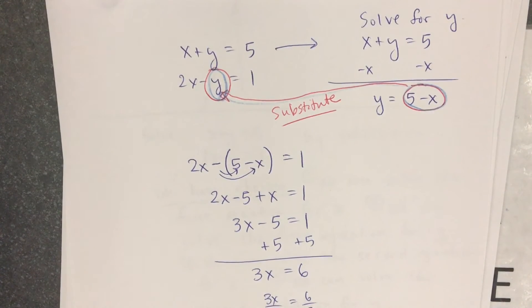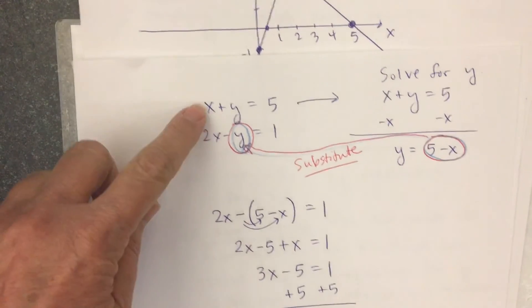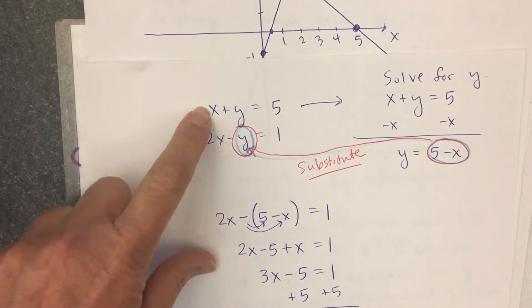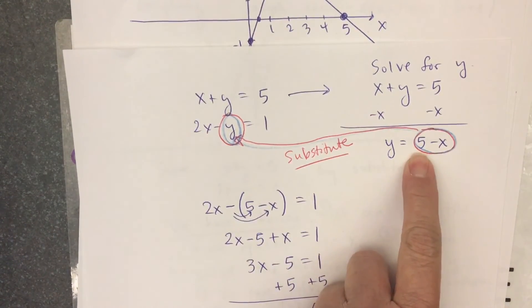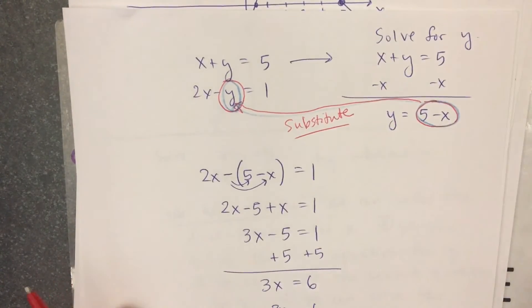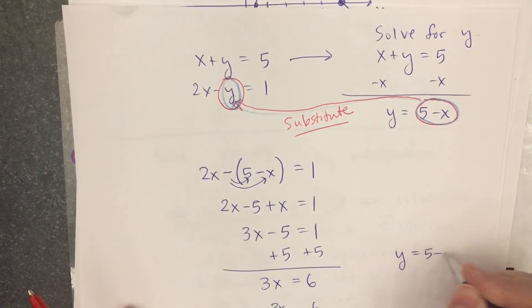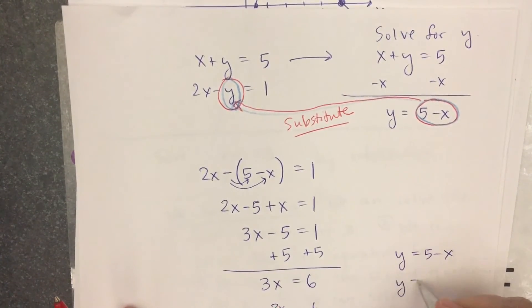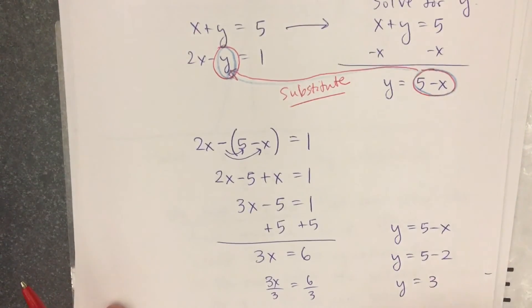So I found what the x value is. How do I get the y value? I can put 2, I could go here, I could put 2 for x, I could go here. So I'll take x equals 2. If y equals 5 minus x, then y is 5 minus 2, and y is 3. So the answer,